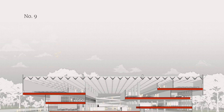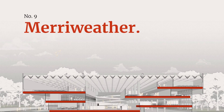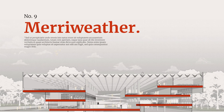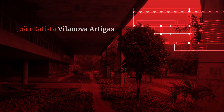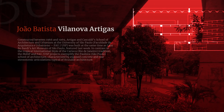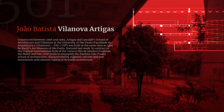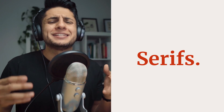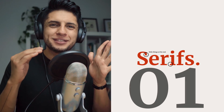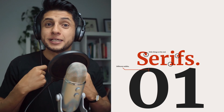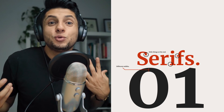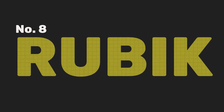Merriweather was designed to be a text face that is pleasant to read on screens. It features a very large height, slightly condensed letterforms, a mild diagonal stress, sturdy serifs, and open forms. It was designed by Sorkin Type and is a free Google font. This is a serif typography, meaning it has those little details at the end of each letter that make it feel a little more elegant — like it's wearing a suit.